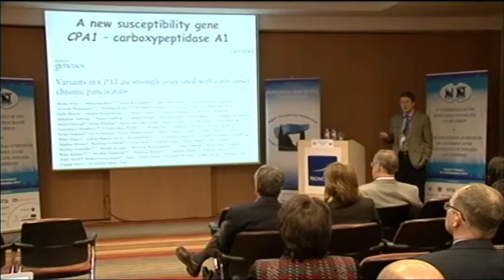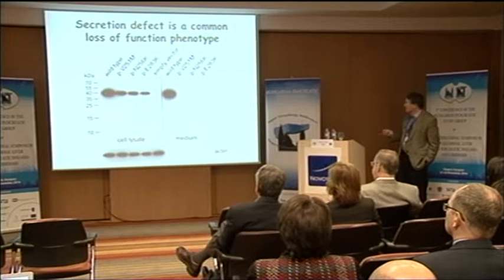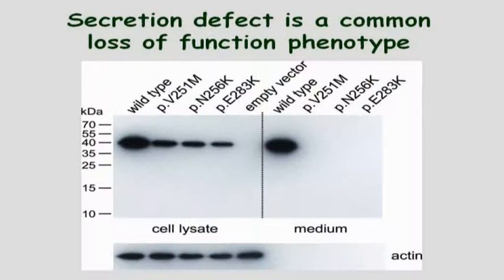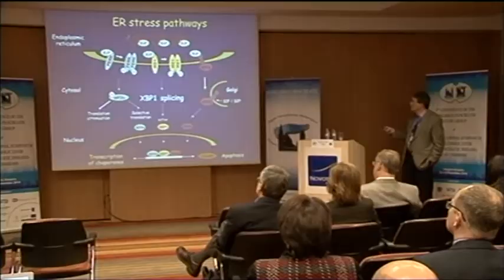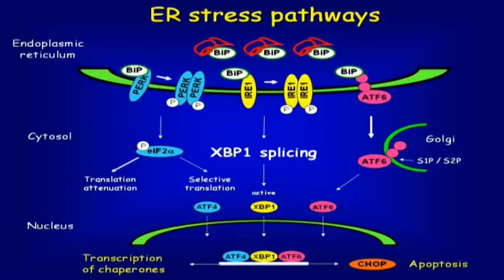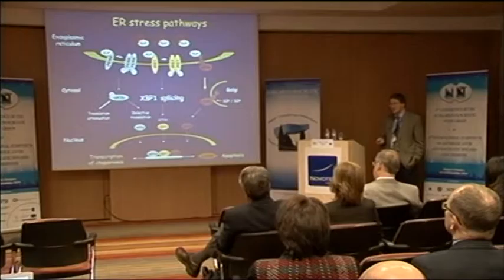For CPA1 misfolding variants, as Heiko showed, you have nothing secreted into the medium — you see some inside but most of it is degraded. This is the typical misfolding phenotype. The assumption is that this will somehow elicit ER stress. During problematic folding or overloading of the ER, there are different signaling pathways which result in the transcription of genes that help folding — a fairly tractable pathway where you can measure different components and demonstrate the presence of ER stress.